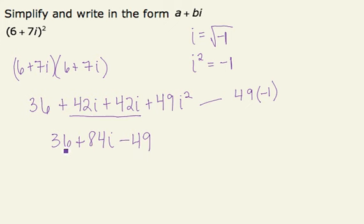I can combine 36 minus 49 to get negative 13 plus 84i. And that is in the form a plus bi. So that is my final answer.